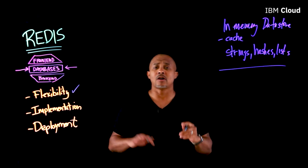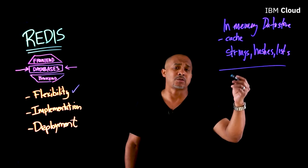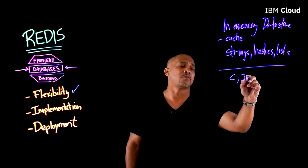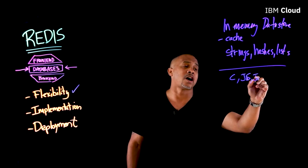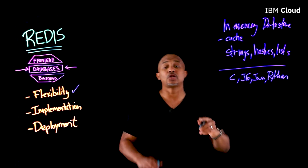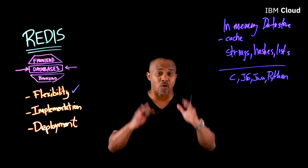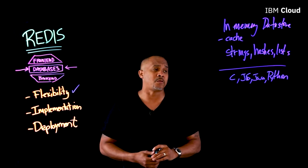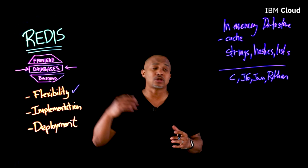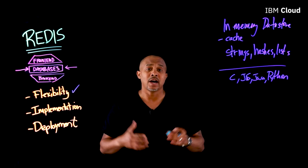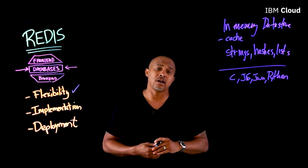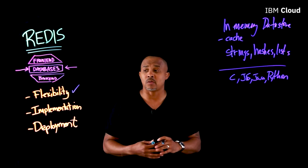Now, implementation. There are certainly all types of SDKs available, from C to JavaScript to Java to Python. Be sure to check Redis.io for all the SDKs that are available. Depending on the language of choice that I want to develop with, how easy is it to actually integrate and implement the infrastructure and the data structures that I want to save?